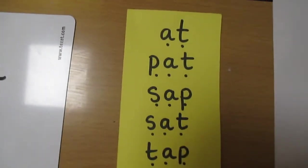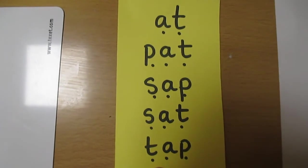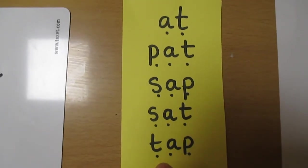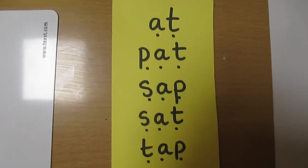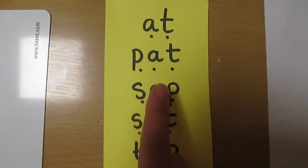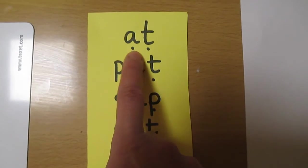Now we're going to have a go at segmenting and blending. To begin with I am going to segment the words and I'd like you to blend them back together with a clap just like you would in phonics. I'll do the first one with you. A-t. At.